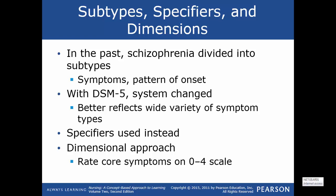Looking at subtypes, specifiers, and dimensions: in the past, schizophrenia was divided into subtypes depending on symptoms and pattern of onset. With the introduction of DSM-5, the system changed to better reflect a wide variety of symptom types. They now use specifiers instead — so rather than saying 'schizophrenia of a catatonic type,' they say 'schizophrenia with catatonia.' This involves a more dimensional approach where core symptoms are rated on a zero to four scale based on the past month's behavior.